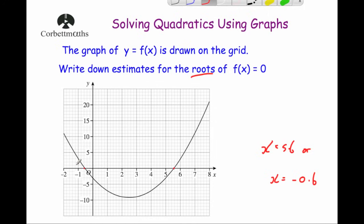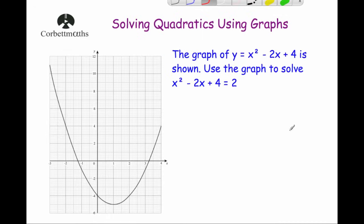The technique is always the same: draw the graph, find where it crosses the x-axis — that's when the equation equals 0 and the graph matches the left-hand side expression. In the last question the graph of y equals x squared minus 2x plus 4 is shown, and we're asked to solve x squared minus 2x plus 4 equals 2. This time we're not finding where y equals 0 — we're finding where y equals 2.